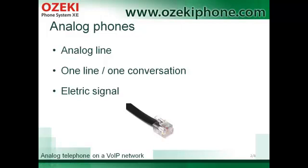Analog lines transmit voice data as electrical signals. One phone converts sound waves into analog electrical waves that will be propagated over the telephone line to the destination. The receiver phone converts the electrical signals back into sound waves. Analog telephone networks are sometimes referred to as the public switched telephone network. These lines are connected to telephones with RJ11 connectors.